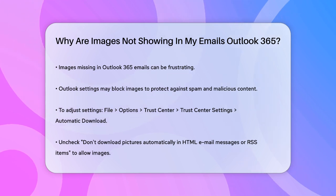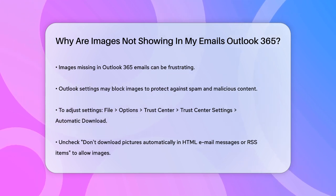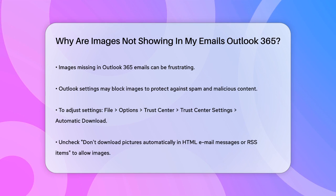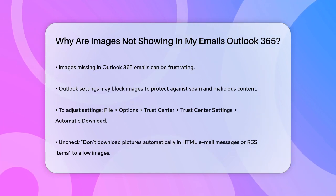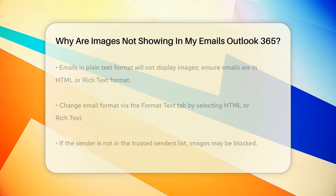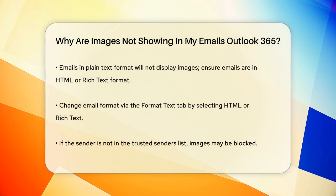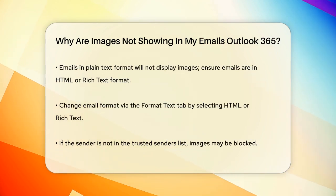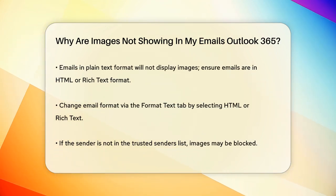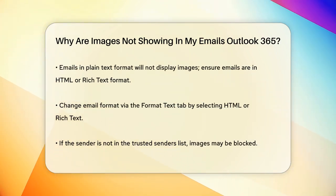you need to go to File > Options > Trust Center > Trust Center Settings > Automatic Download. Make sure the option that says "Don't download pictures automatically in HTML email messages or RSS items" is unchecked. This will allow images to download and display properly.